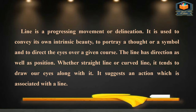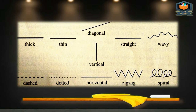Line shows both position and direction. It can be of any type — straight line or curved line — depending on the drawing or content. Some different types of lines are: thick line, thin line, diagonal line, straight line, wavy line, vertical line, dashed line, dotted line, horizontal line, zigzag line, and spiral line.